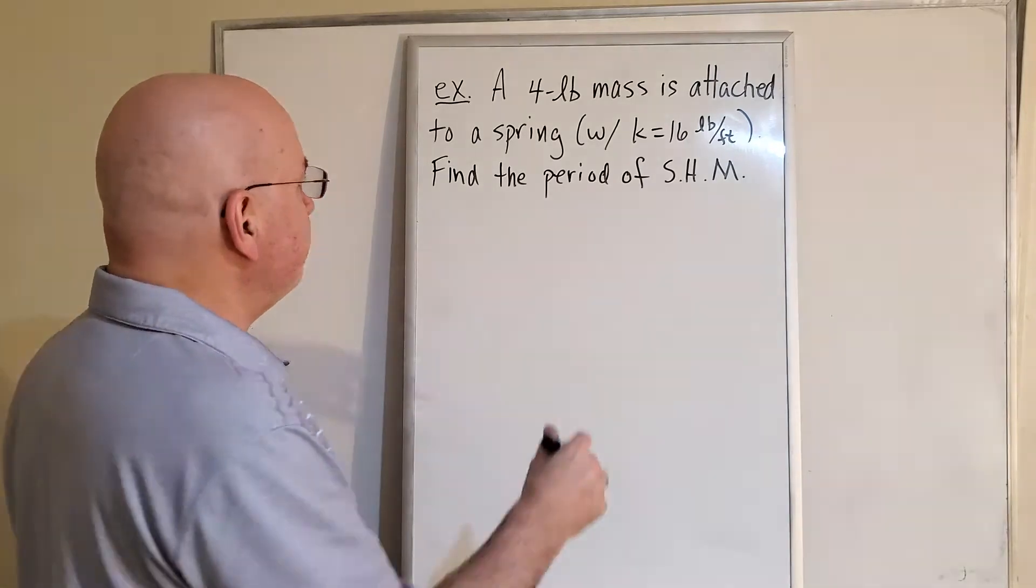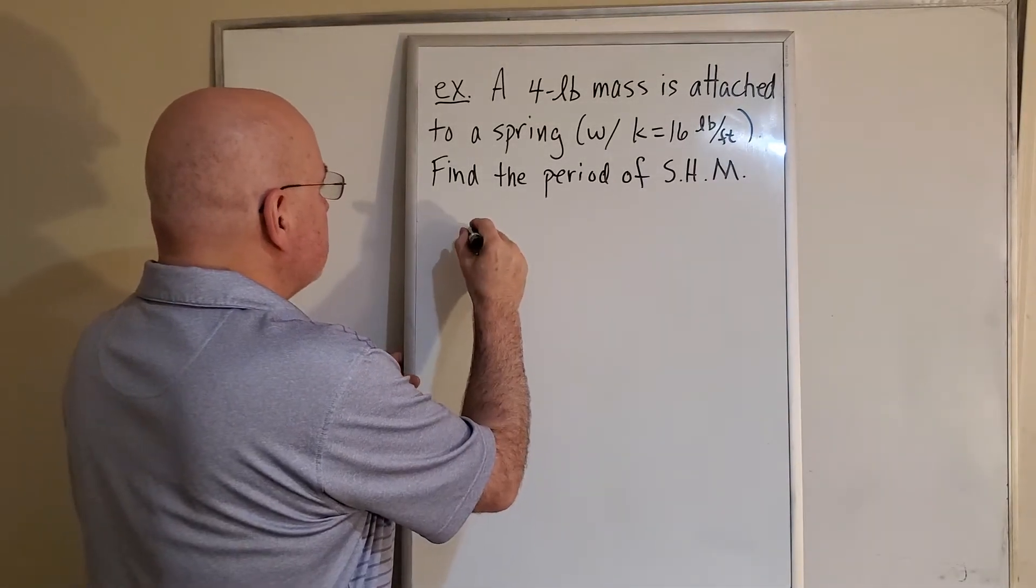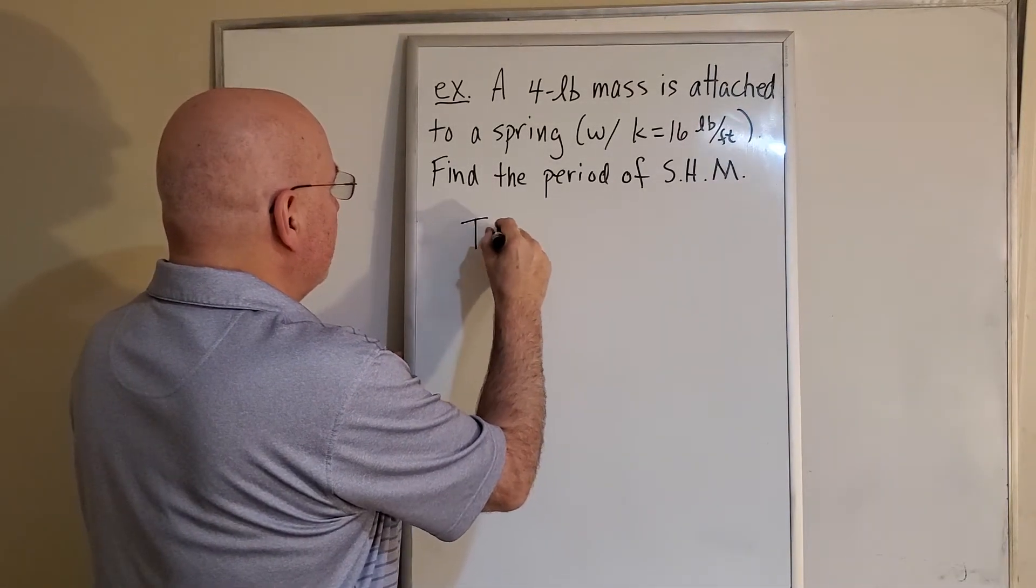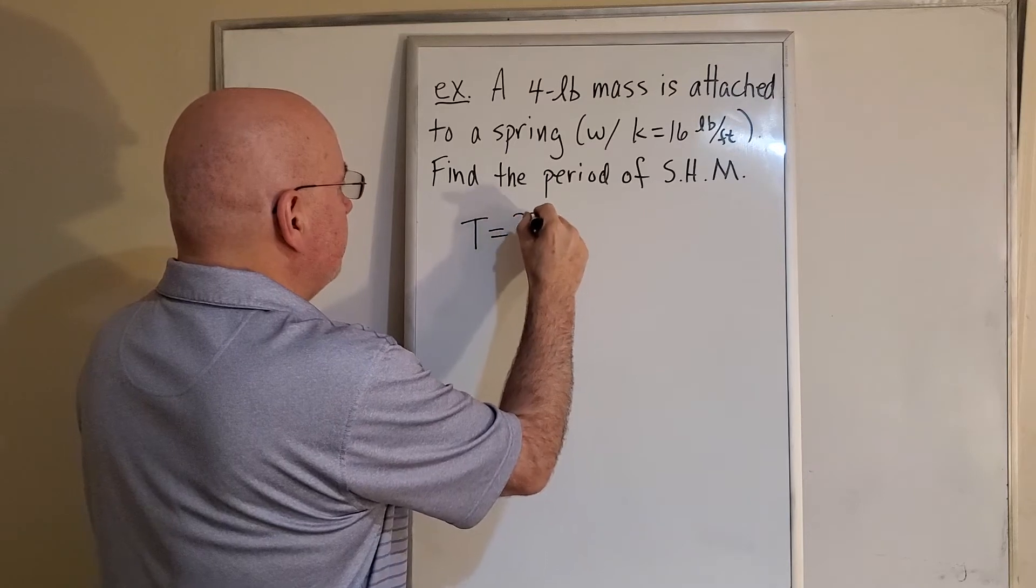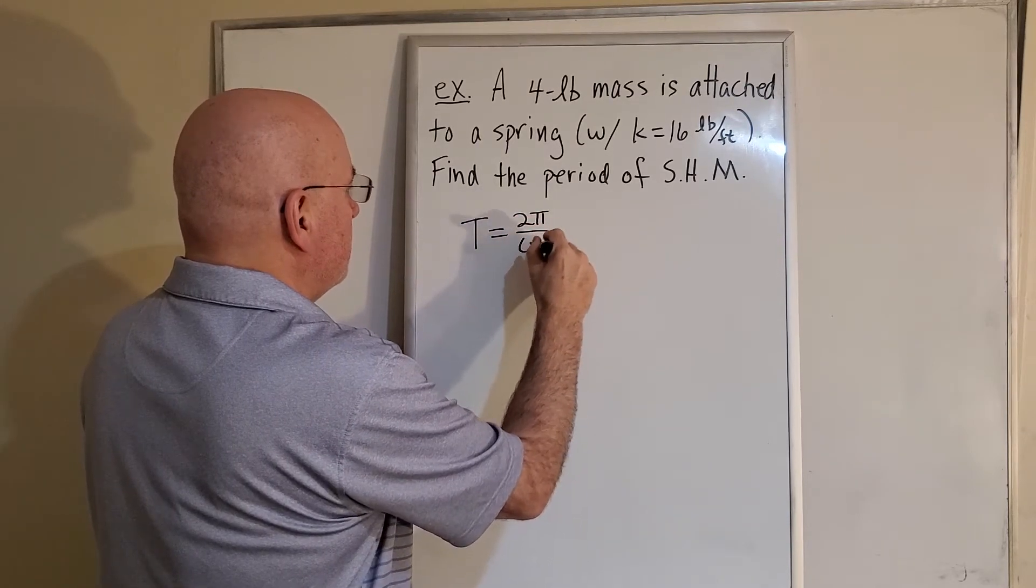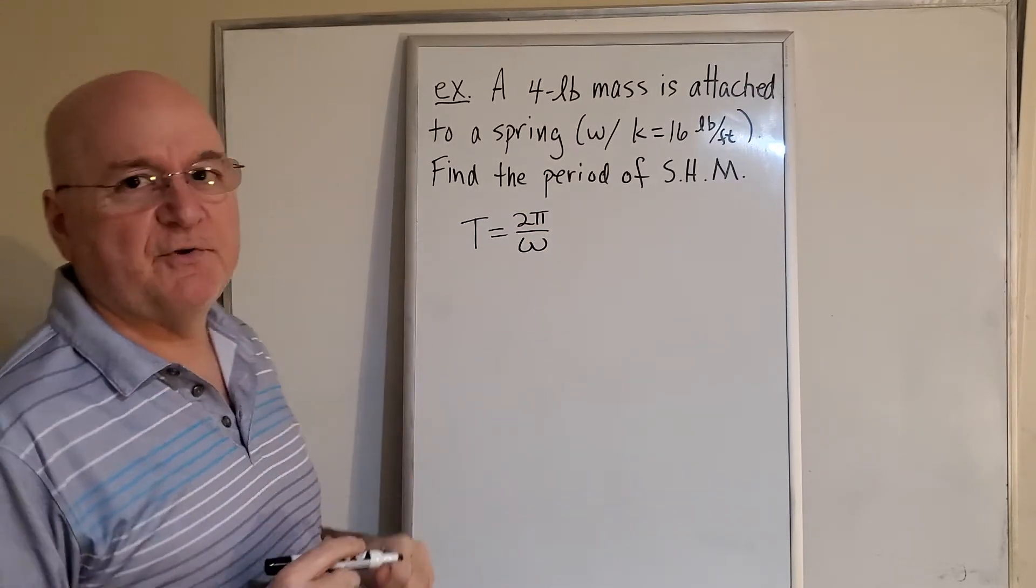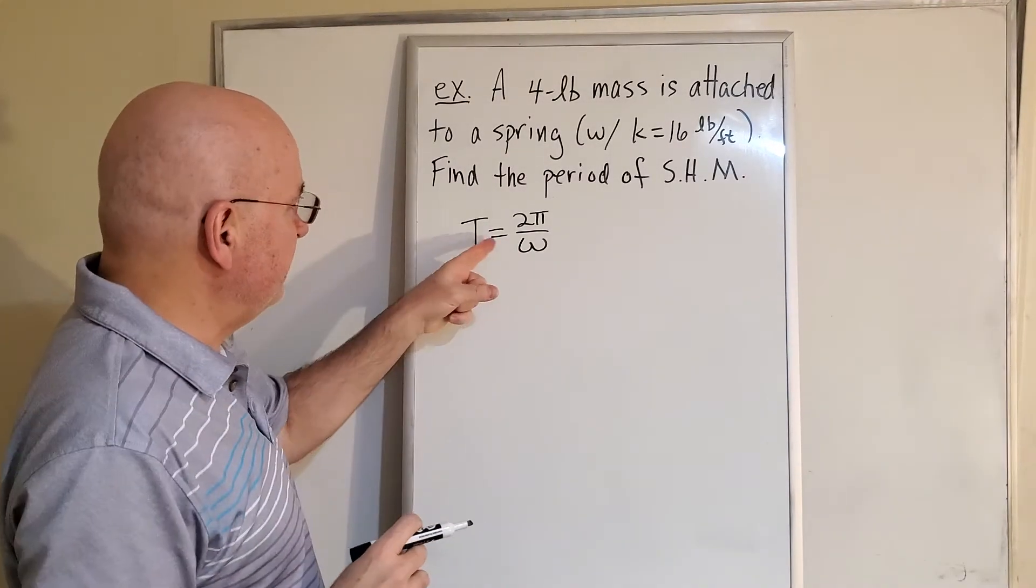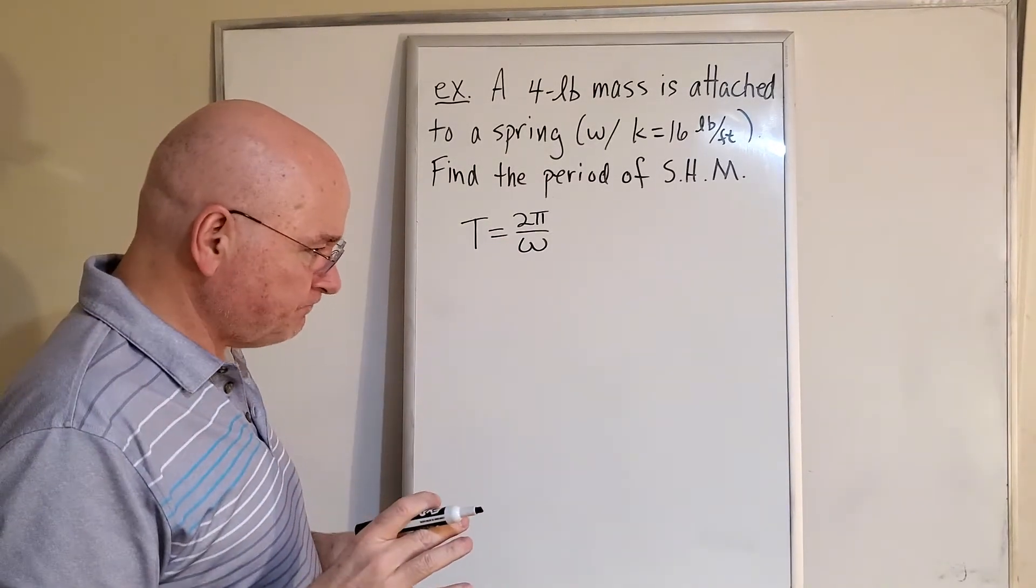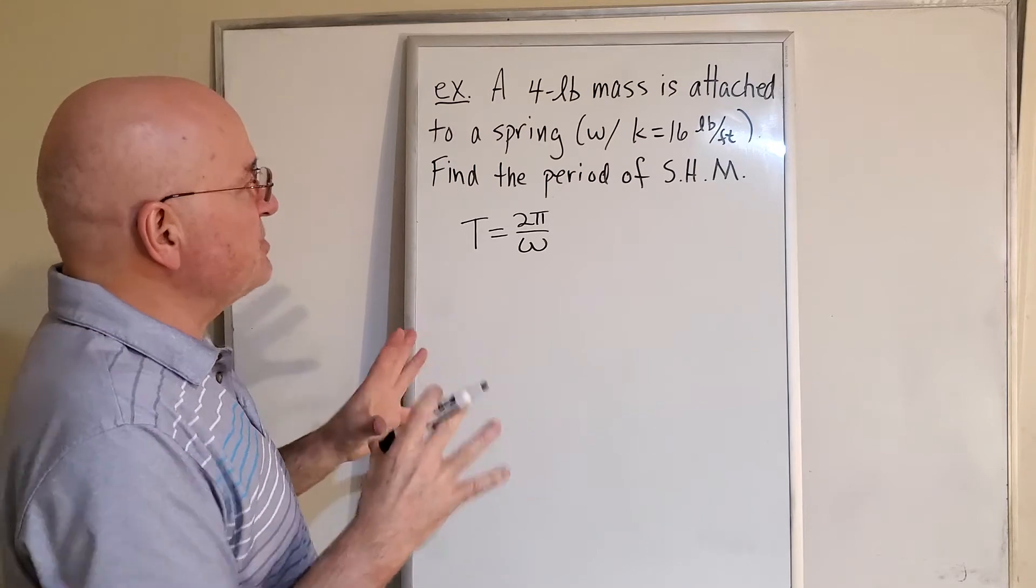Period is a length of time, it's T. What we're looking for is T. Well, the only thing we don't know is omega in this, so let's go ahead and just write out what the